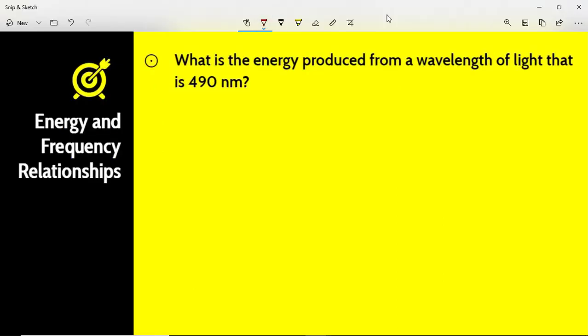What is the energy produced from a wavelength of light that is 490 nanometers? We can use our formula E = hc/λ. We know h, we know c. Lambda we just need to convert to meters and we'll be in good shape. So we plug in E = h, 6.626×10^-34.